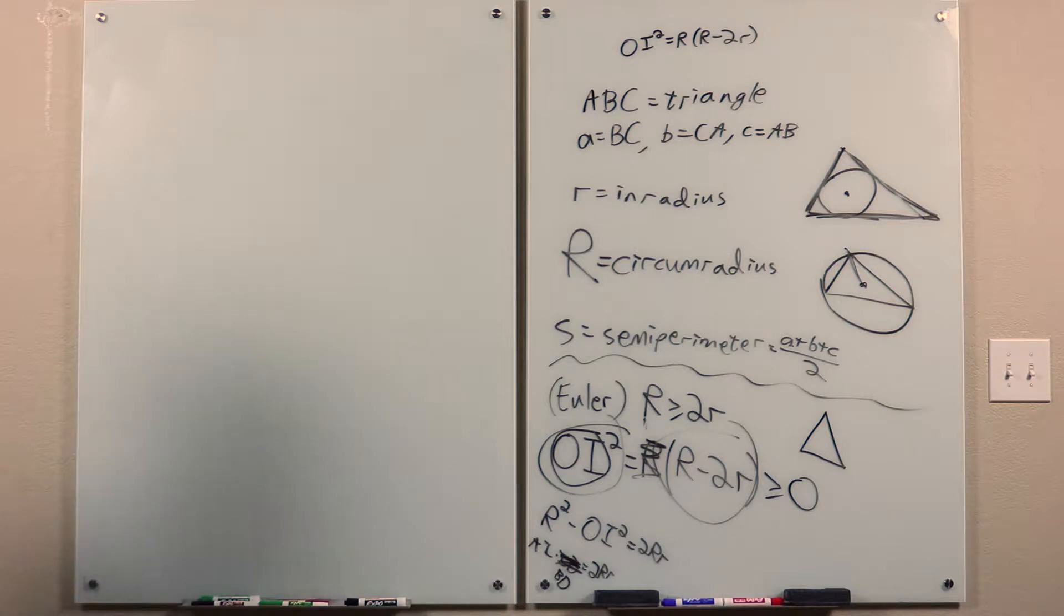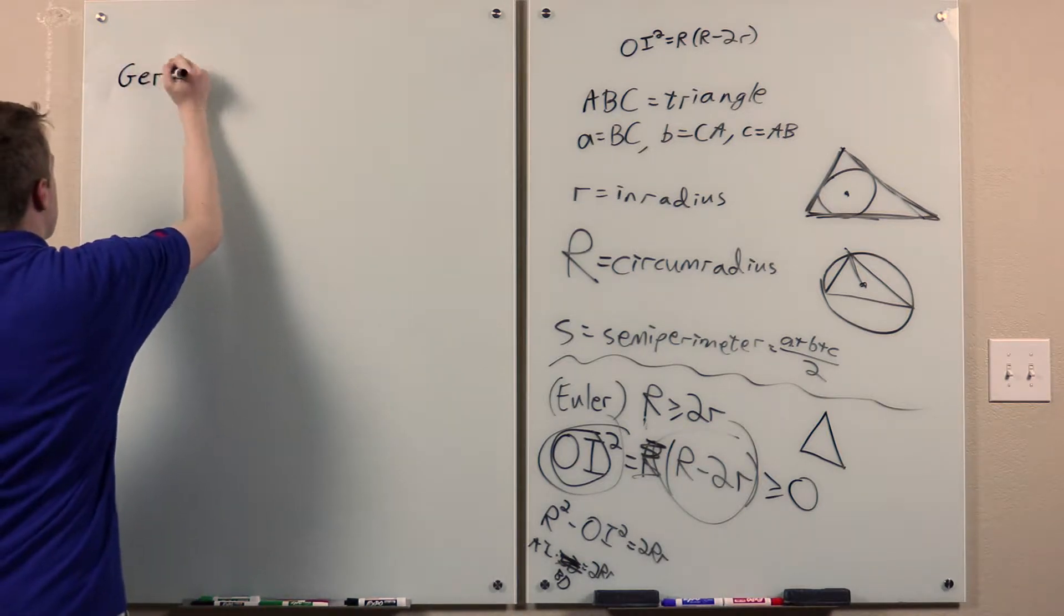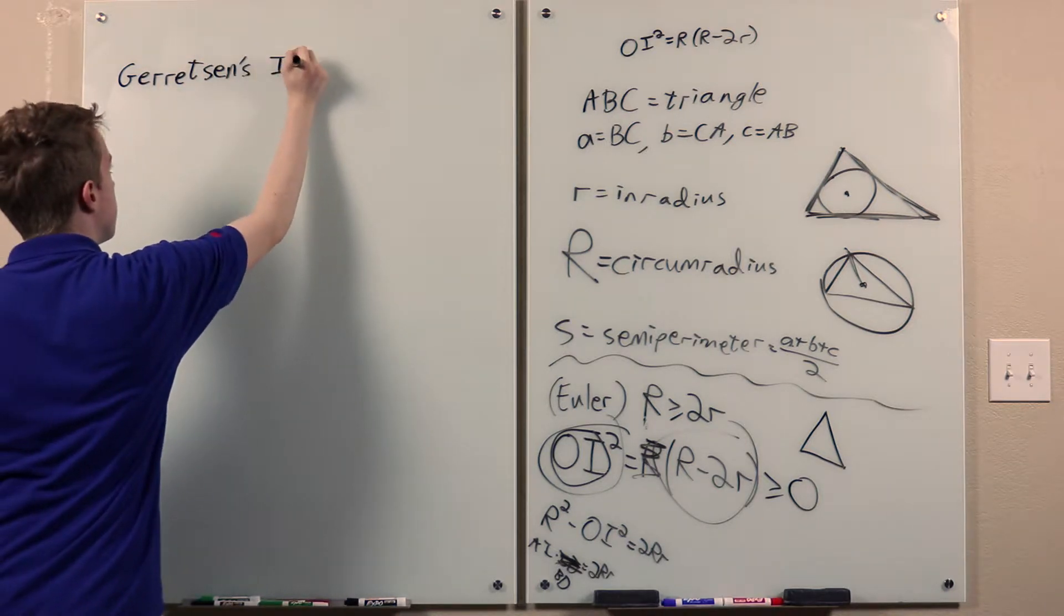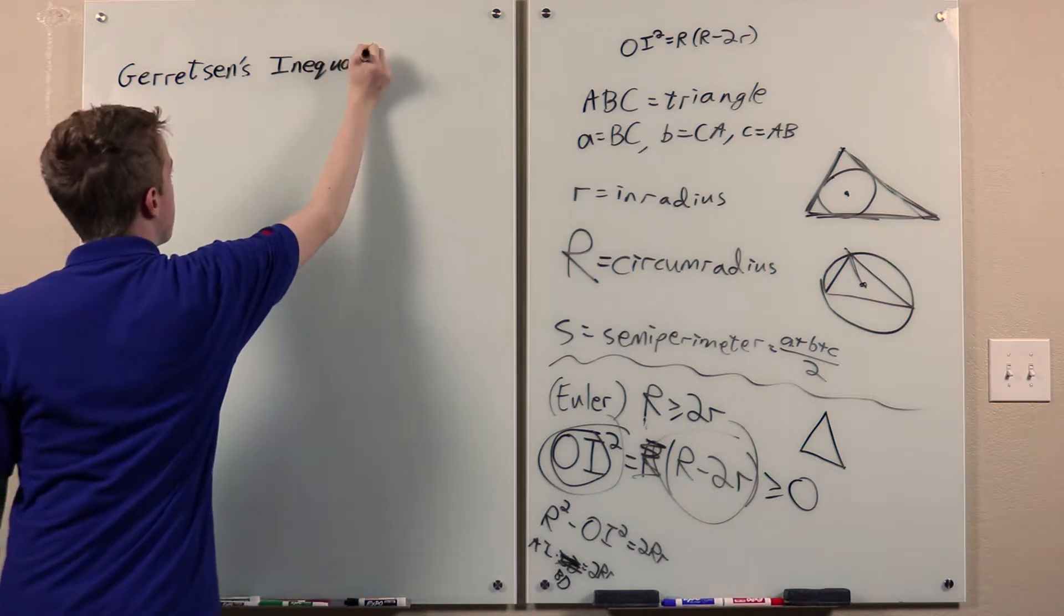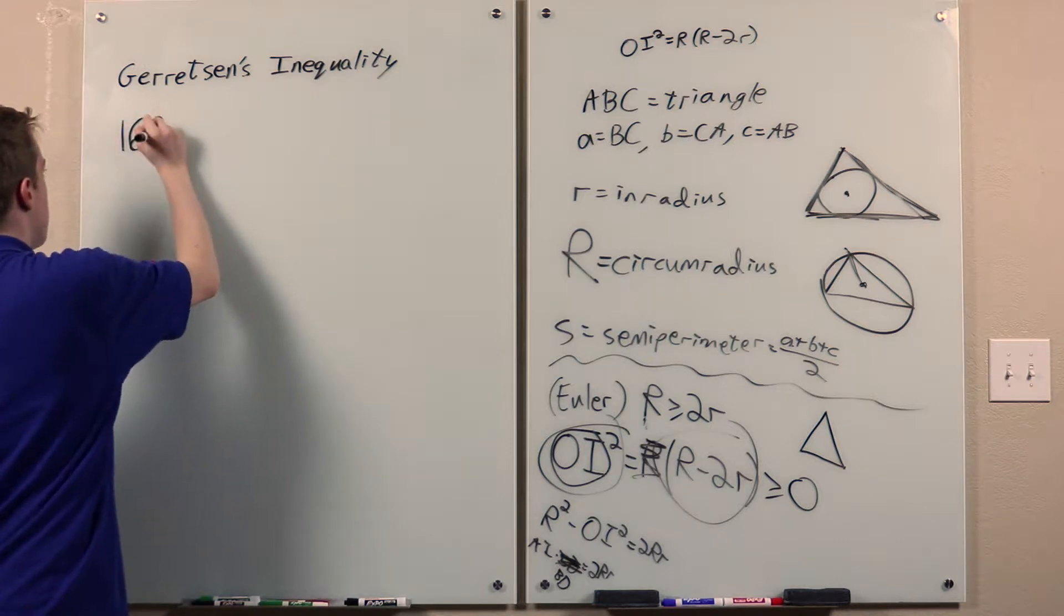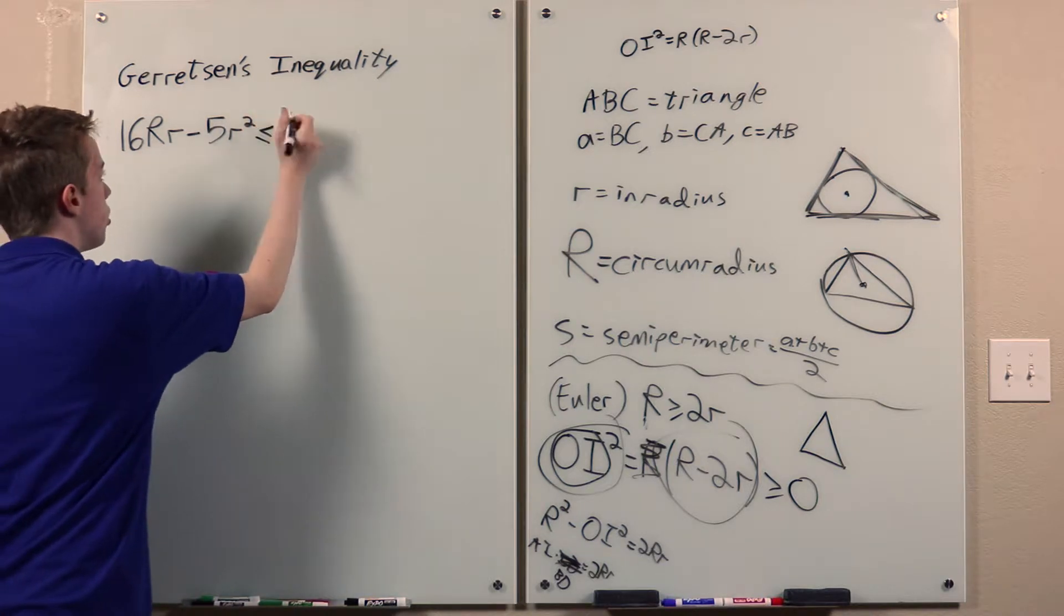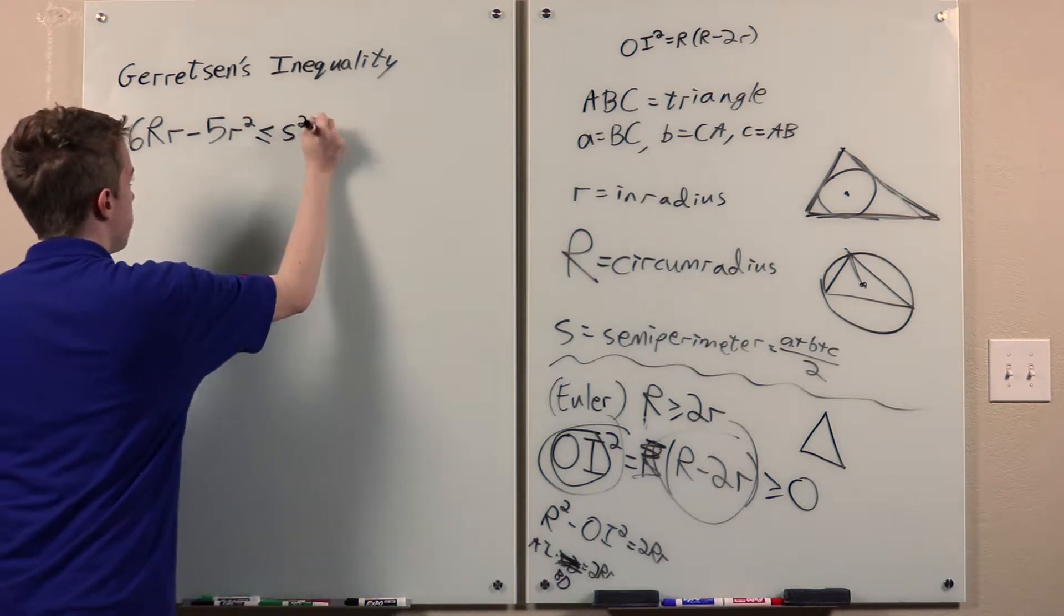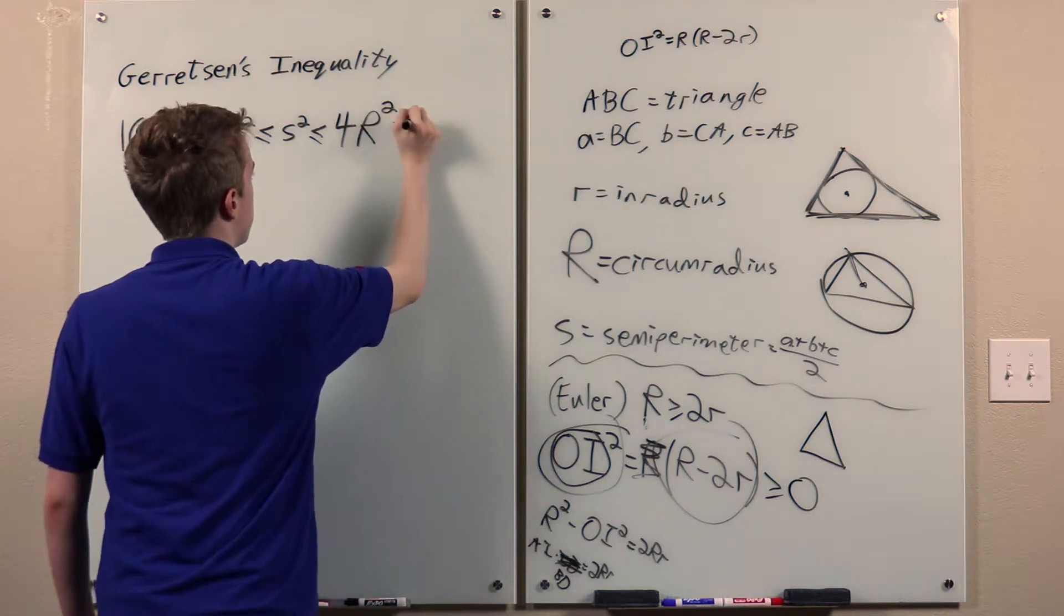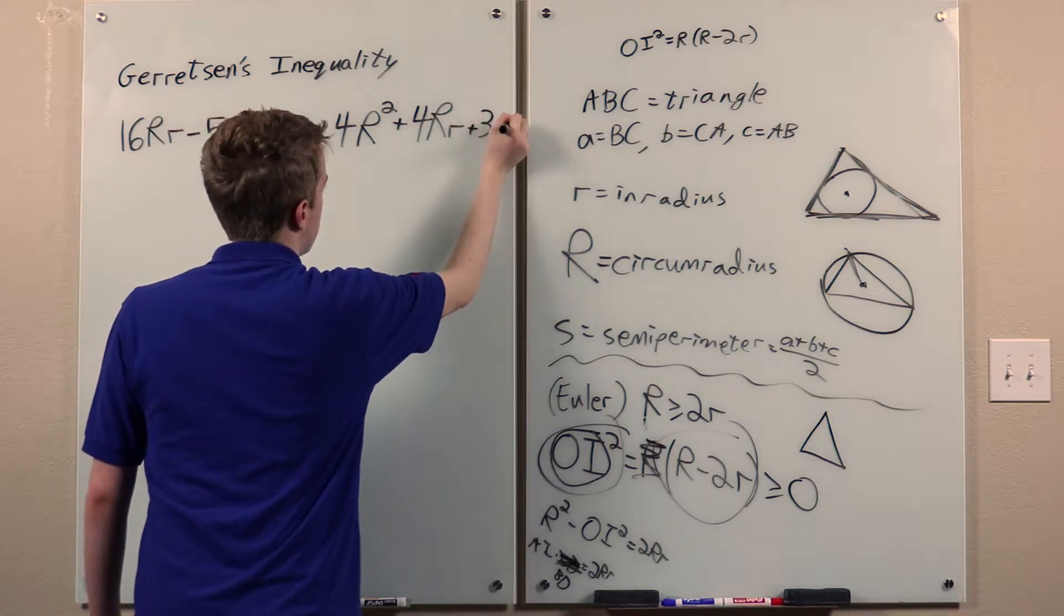Now for the biggie, Gerretson's Inequality, which says 16 big R little r minus 5 little r squared is less than or equal to s squared, is less than or equal to 4 r squared plus 4 big R little r plus 3 little r squared.